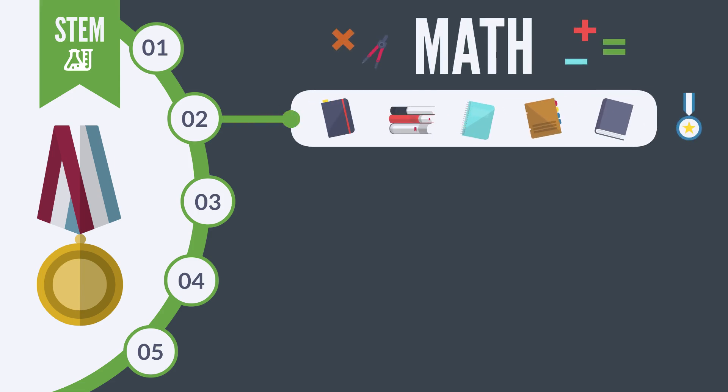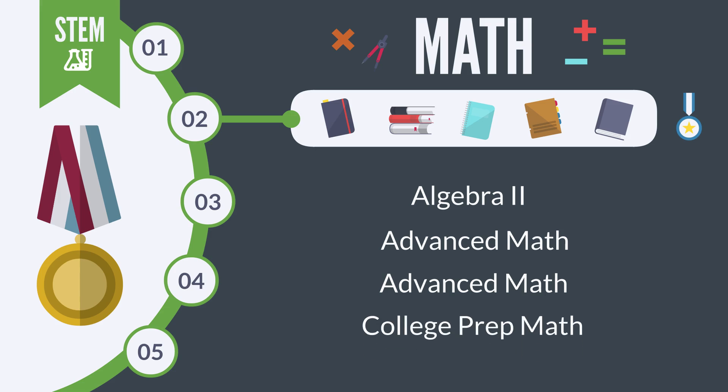Option two is a great choice for students who want to focus mainly on the math. You will need to complete Algebra 2 and two advanced courses for which Algebra 2 is a prerequisite. Please keep in mind that you cannot use the College Prep Math course to meet the requirement for this option.